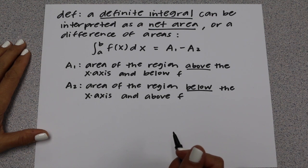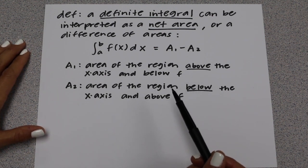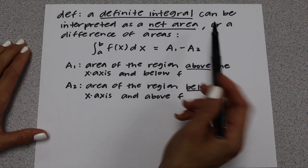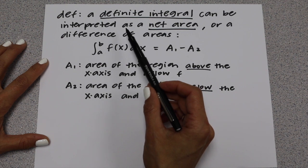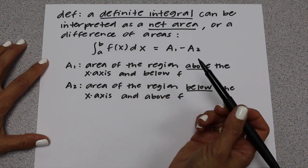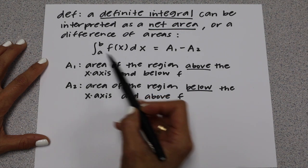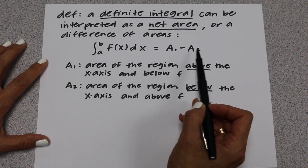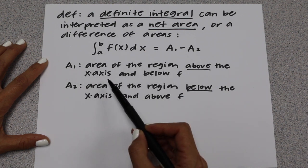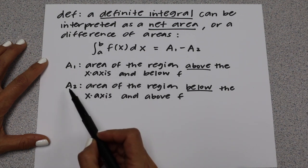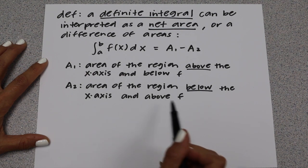In this lesson we're going to talk about definite integrals — this is more of an intro. The first thing we're going to talk about is thinking about definite integrals as area under the curve. You have the integral from a to b of f dx equals A₁ minus A₂, where A₁ is the area of the region above the x-axis but below the curve, and A₂ is the area of the region below the x-axis and above the curve.